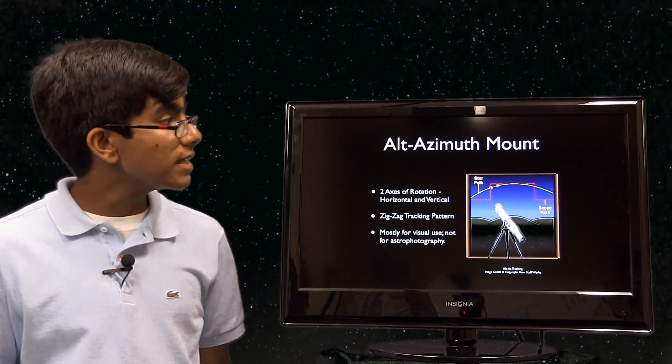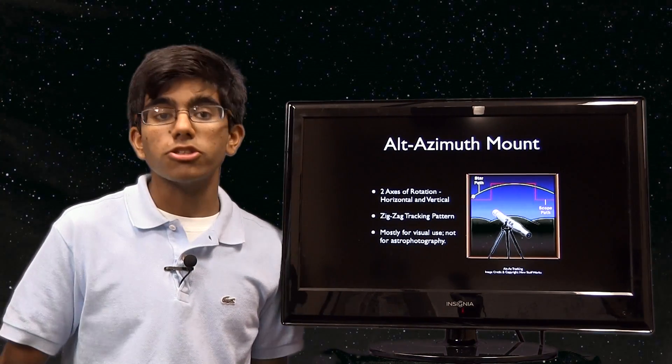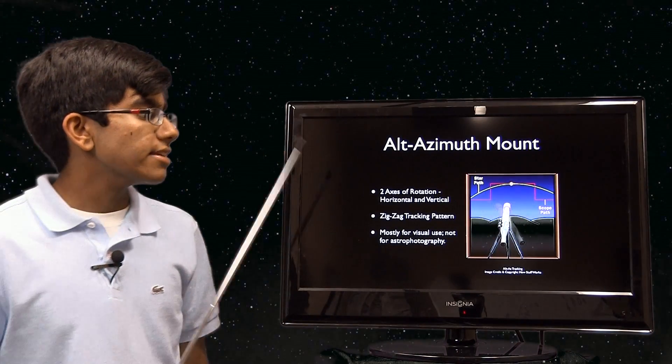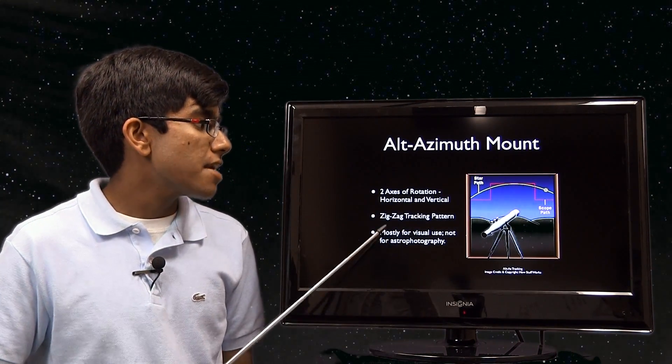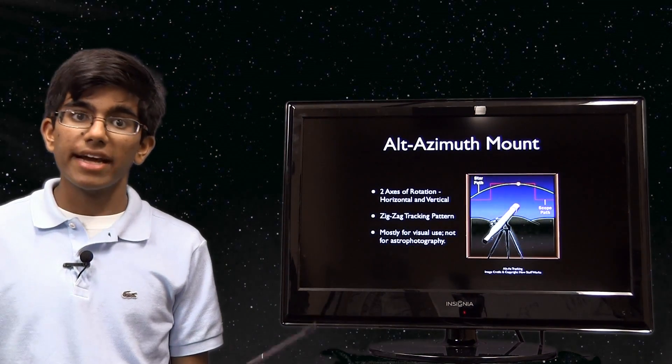So let's move on to the alt azimuth mount. You can put any type of optical tube on any type of mount—you just need to have the right mount. The alt azimuth mount has two axes of rotation, horizontal and vertical. It features a zigzag tracking pattern and it's mostly used for visual use, but not astrophotography.